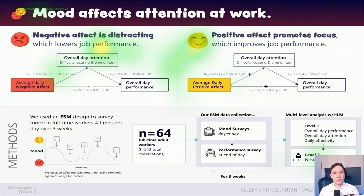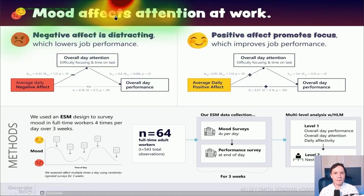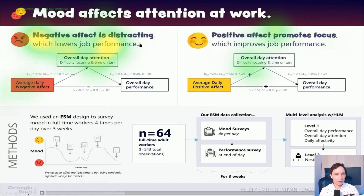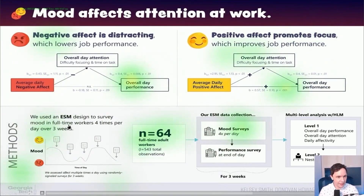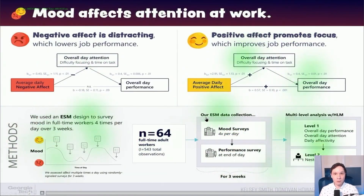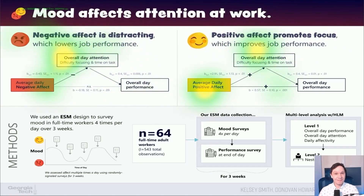Now that you've seen the other layouts, I want to show you the most effective poster again so you can see one more thing. As you scan this poster, you're learning constantly — it speaks in takeaway statements. 'Mood affects attention at work.' 'Negative affect is distracting, which lowers job performance.' 'Positive affect promotes focus, which improves job performance.' Then you see the SEM models, big figures, and a notional methods graph of mood over time with survey points. You can read this entire poster from four or five feet away in less than a minute and learn three takeaway statements, their data collection method, and their analysis. That's an effective research poster.